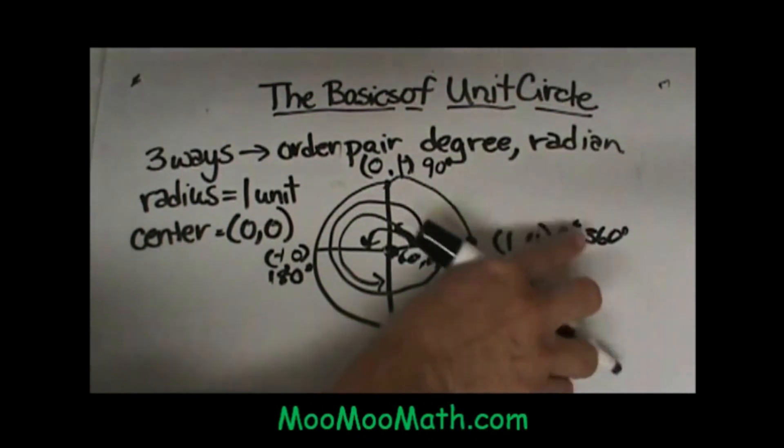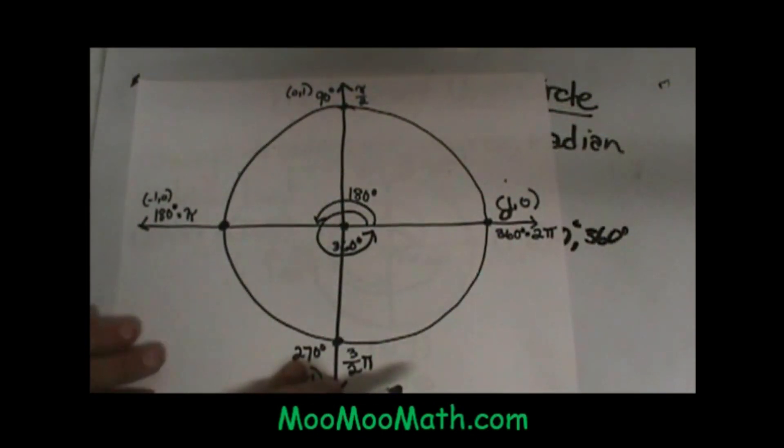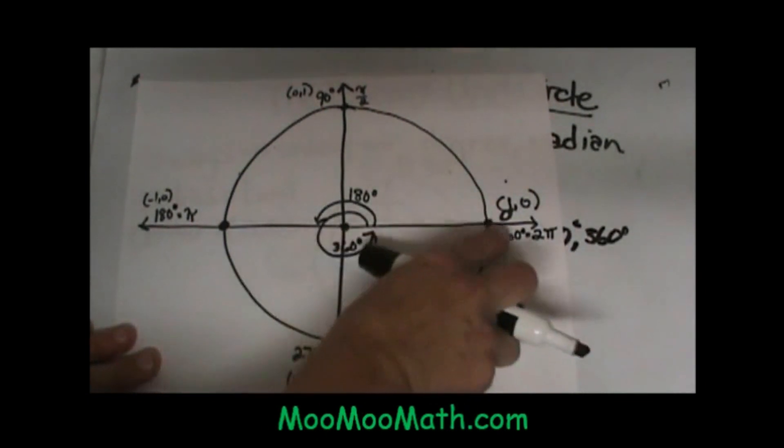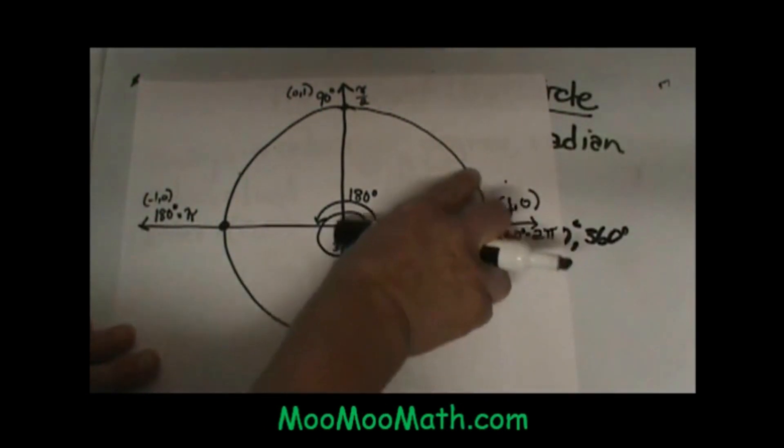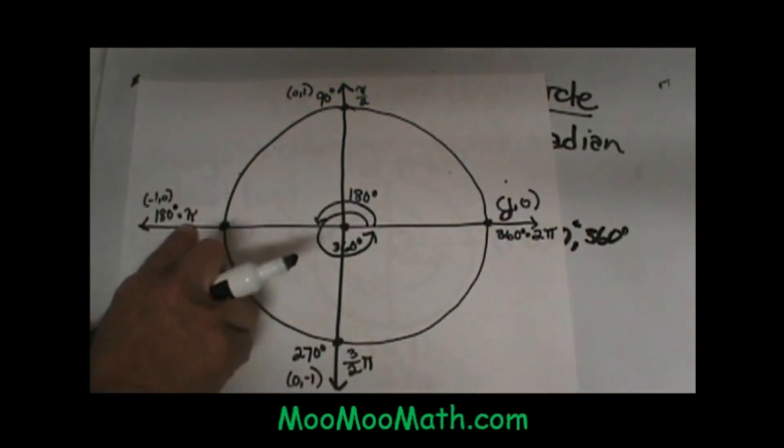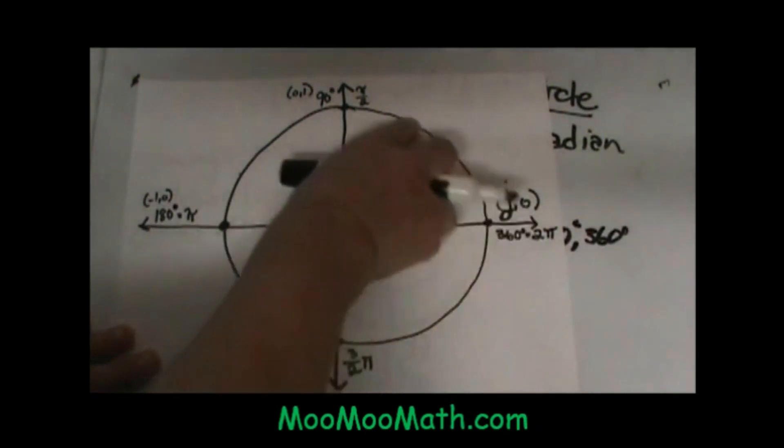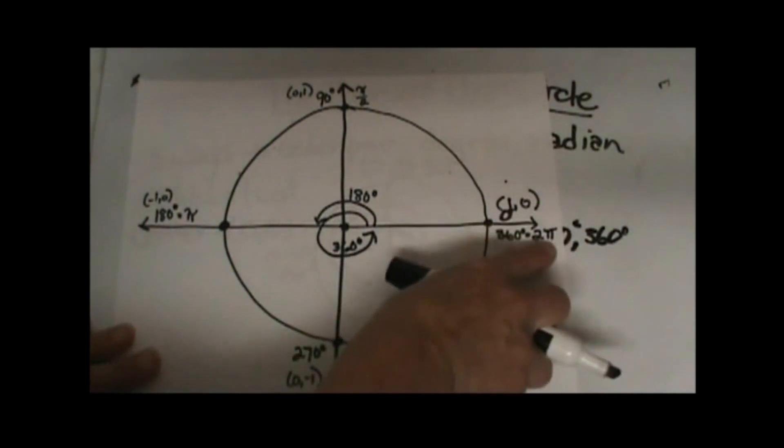Now let's talk about radians. I've given you a clean sheet to look at. Here's our point (1,0). Now in radians, half way around the circle, we call that π, all the way around the circle is 2π.